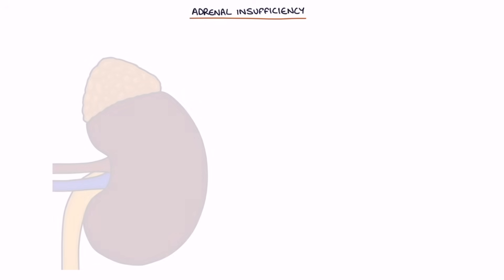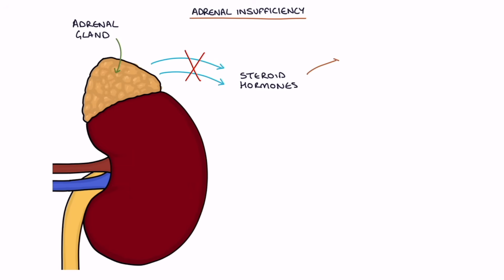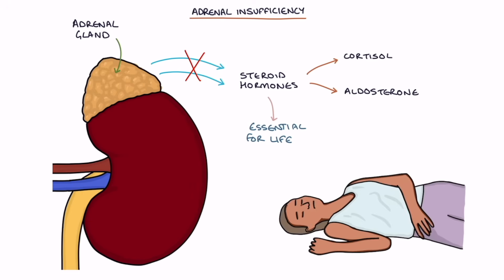Adrenal insufficiency is where the adrenal glands do not produce enough steroid hormones, particularly cortisol and aldosterone. Steroid hormones are essential for life, which makes the condition life-threatening.